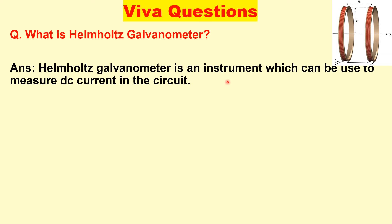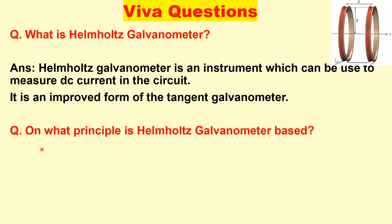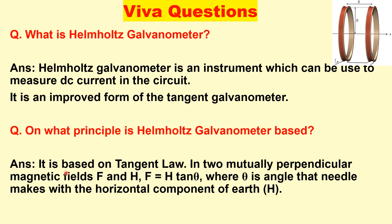Now we will discuss important viva questions. First question is what is Helmholtz galvanometer? Helmholtz galvanometer is an instrument which can be used to measure the DC current in the circuit. It is an improved version of tangent galvanometer. On what principle does Helmholtz galvanometer work? It is based on tangent law. If we have two mutually perpendicular magnetic fields F and H then F equals H tan theta, where theta is the angle that needle makes with the horizontal component of earth.